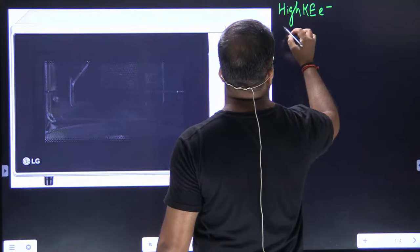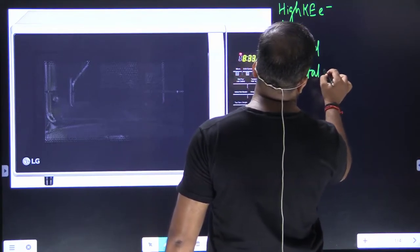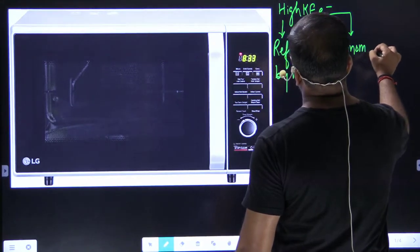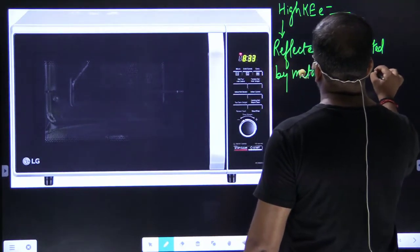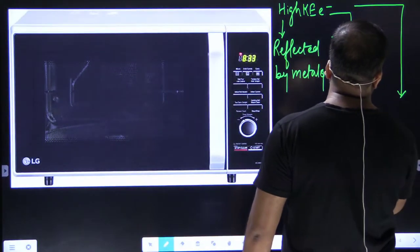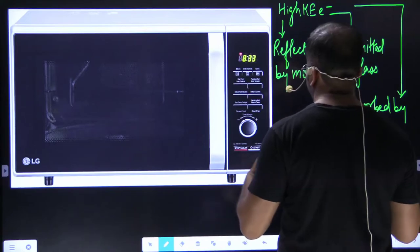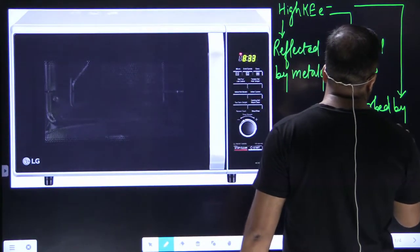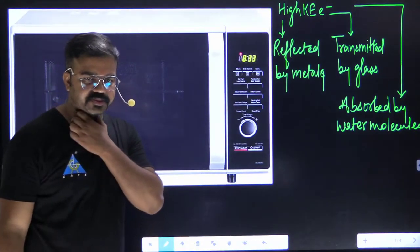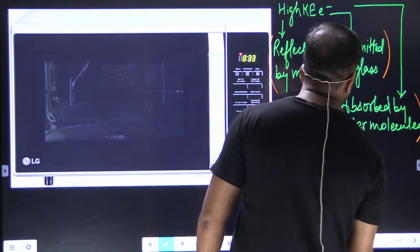These released microwaves, these high kinetic energy electrons, are number one: reflected by metals. Can you tell me why? Because metals are already electron sufficient. They have ample amount of electrons. They are transmitted by glass because kinetic energy is more, and they are absorbed by water molecules. Our food, all the organic stuff, contains a huge amount of water molecules.